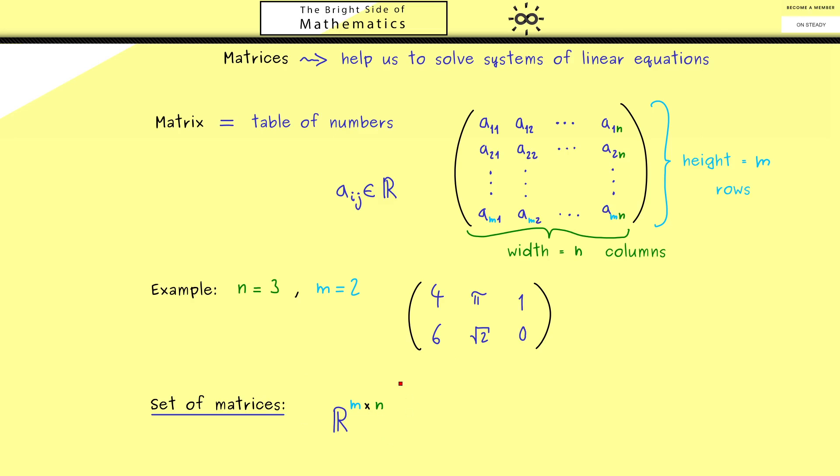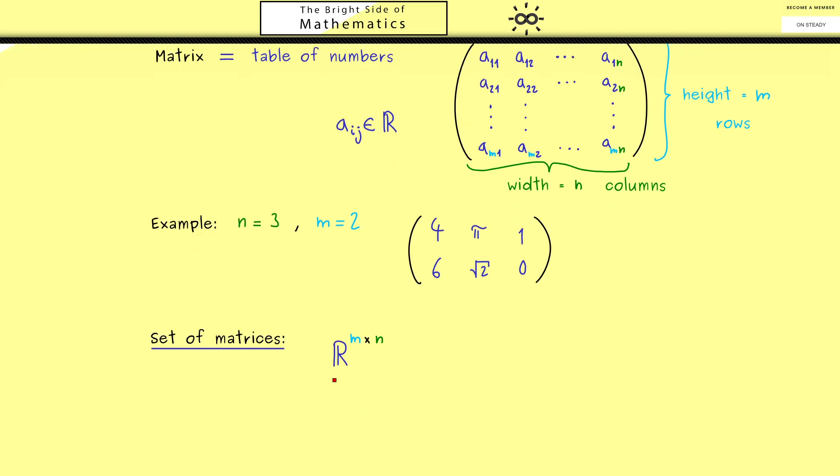So what you should see here is in this set the form of the matrix, the rectangle, is fixed by the two numbers m and n.